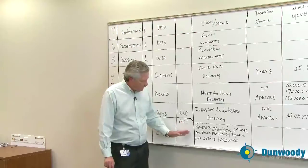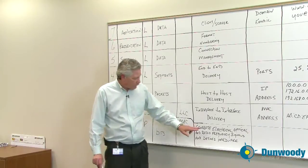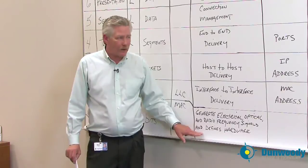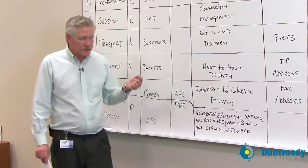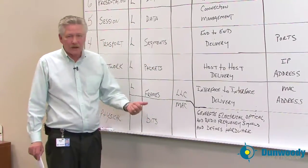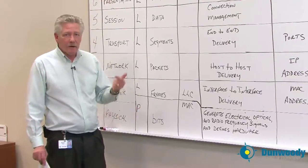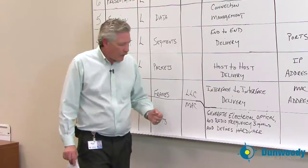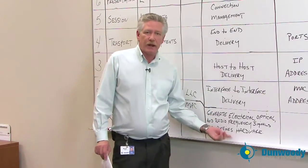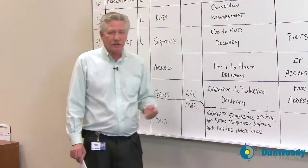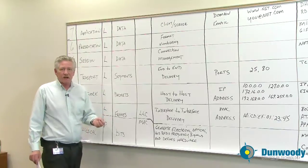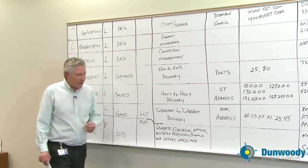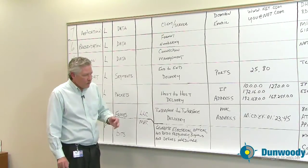At the physical layer, it generates the electrical, optical, and radio frequency signals, and it also defines the hardware that we use, such as the type of wire — whether it be coaxial wire, twisted pair, fiber optic, whether it's single mode or multi-mode fiber optic — what the jacks look like, and how they fit together into the ports, whether it be an RJ11, RJ45, RJ48, or whatever.